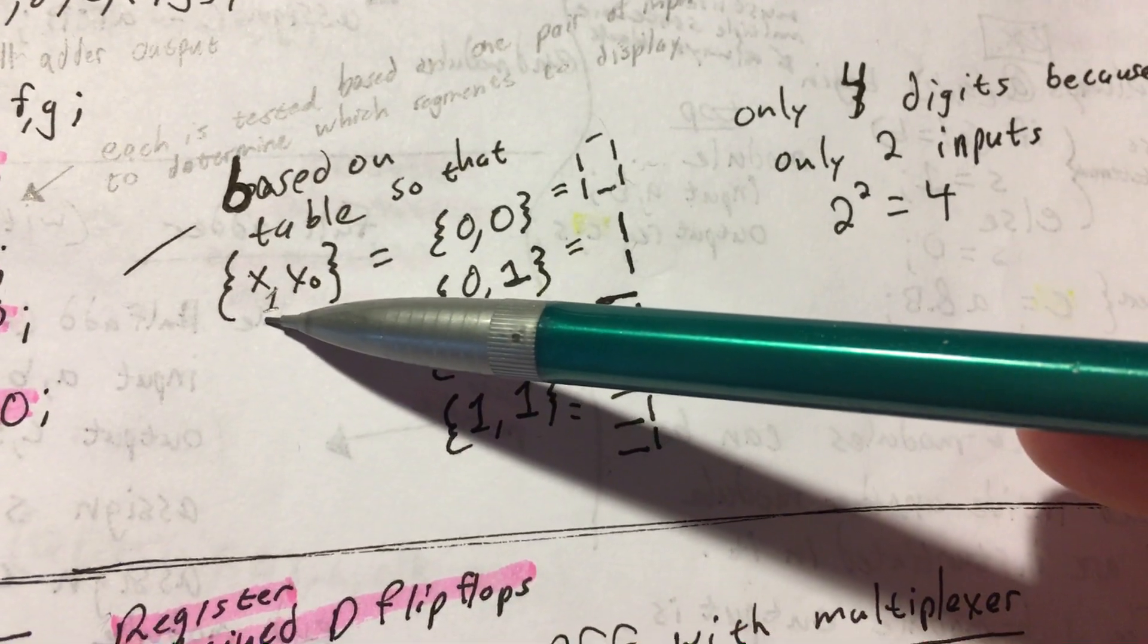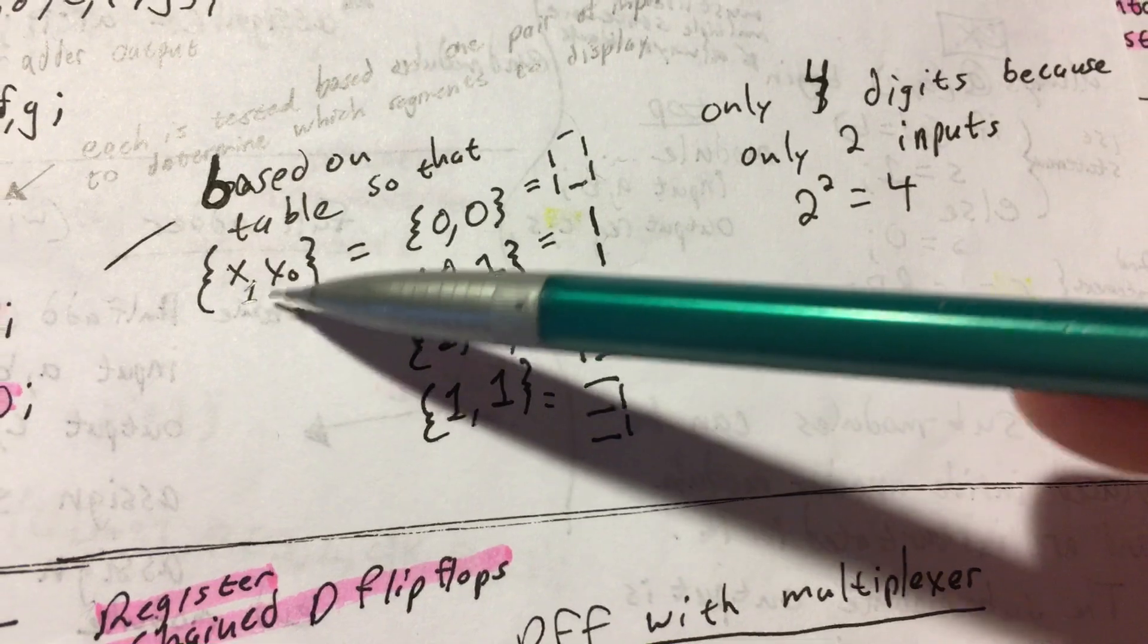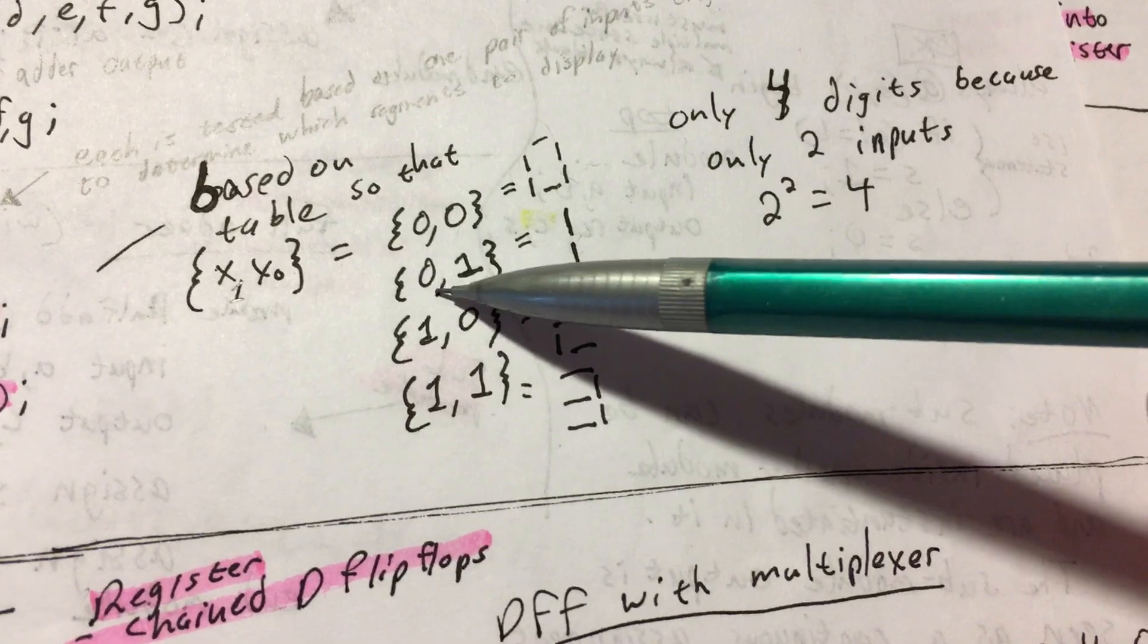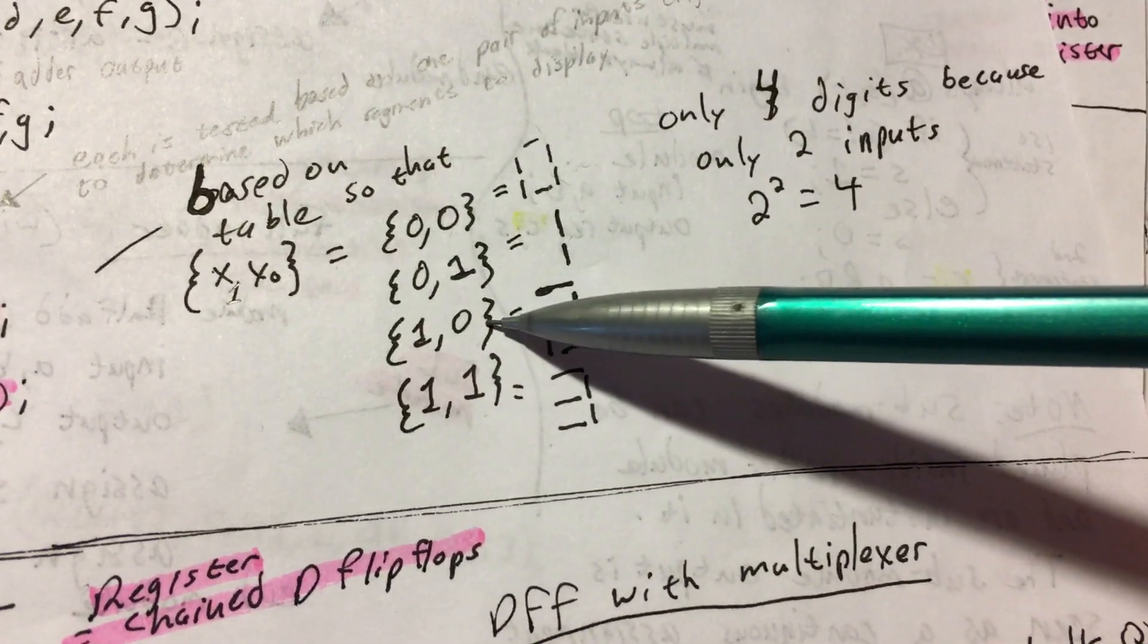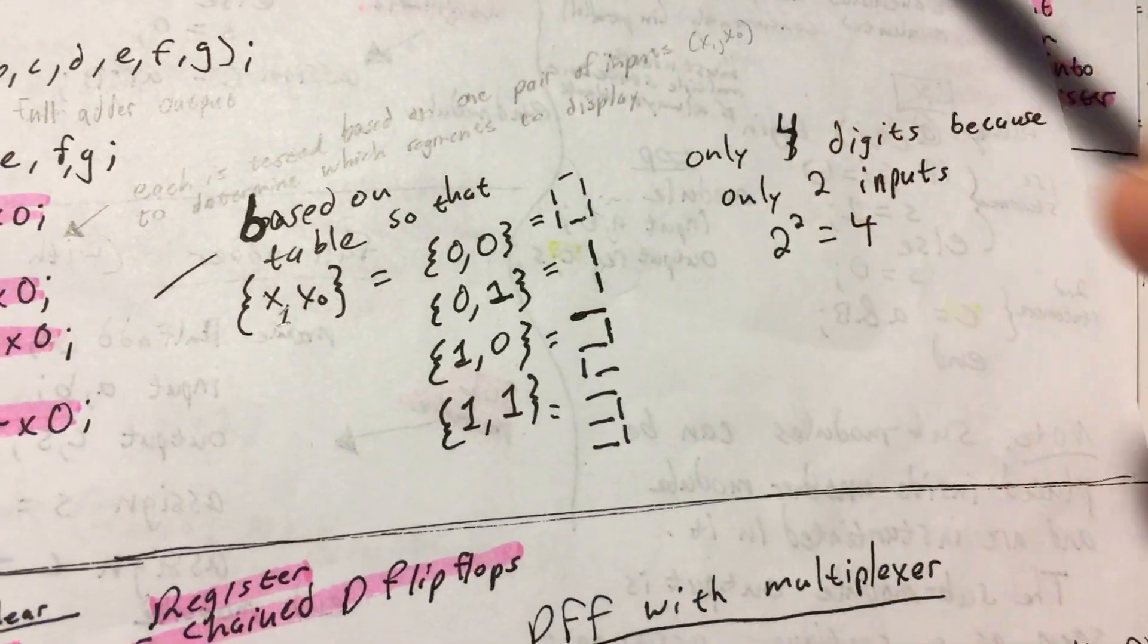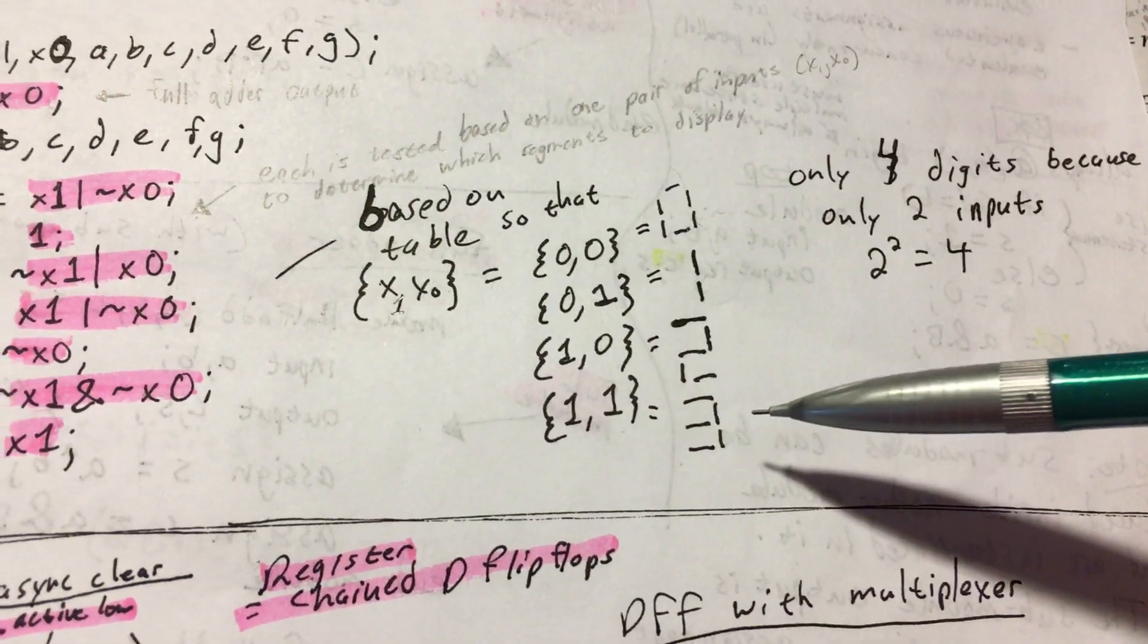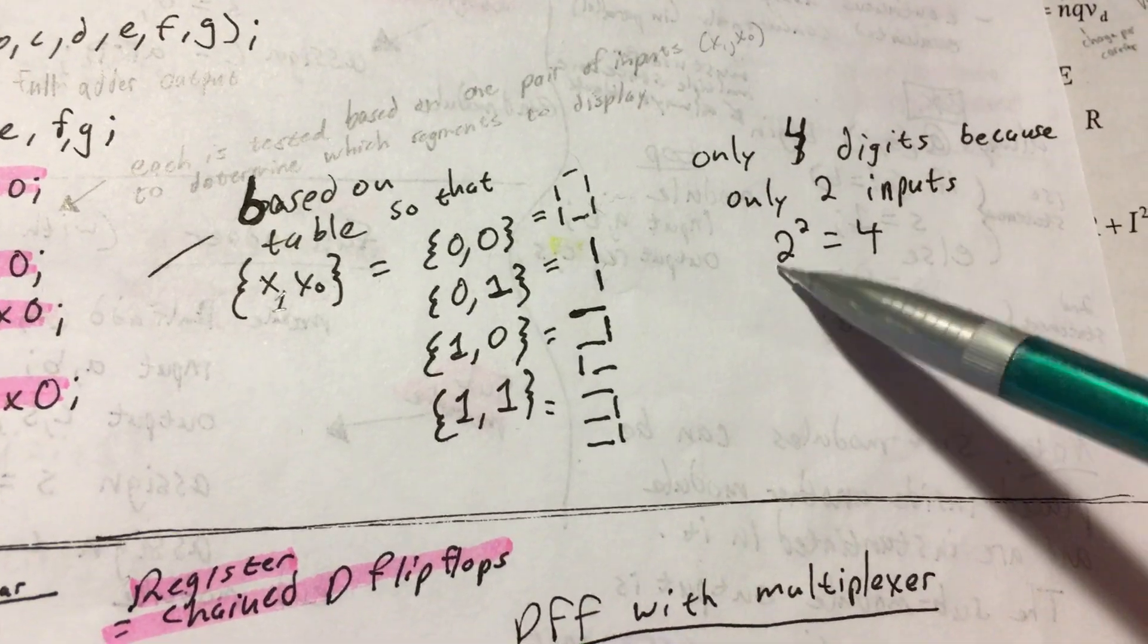So button 1, button 2, or whichever way you want to look at it. These are the two buttons: 0, 0 is 0. 0, 1, binary 1 is 1. Binary 2, 1, 0 is 2. And 1, 1 is binary 3. Since there's only two inputs, there can only be four digits. Only four digits because two inputs. Two to the four, two squared is four.